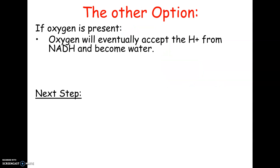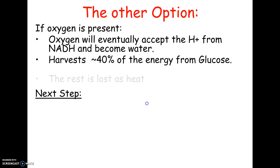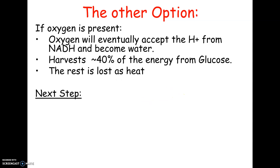In aerobic respiration, oxygen picks up the hydrogens from NADH, and water is your final product. You'll still only harvest about 40% of the energy from glucose — that's what gets captured in your ATP — and the rest is lost as heat. So that's glycolysis and our introduction to cell respiration. In the next lecture, we'll talk about the other two steps: the Krebs cycle and the electron transport chain.